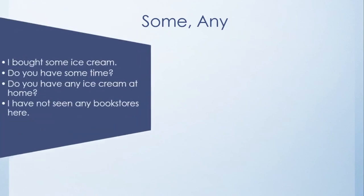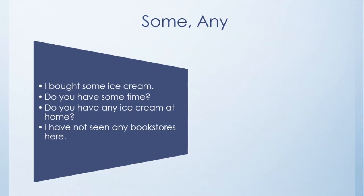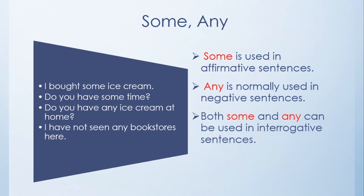Some and any can refer to both quantity and number. Some is used in affirmative sentences and also in interrogative sentences when making an offer or a polite request, expecting the answer to be yes. Any is used in negative and interrogative sentences — we use any when it is clear the answer will be no. For example: 'I have not seen any bookstores. Do you have any ice cream at home?'